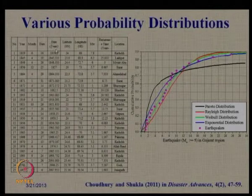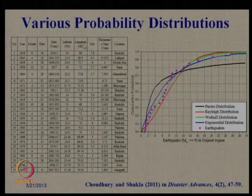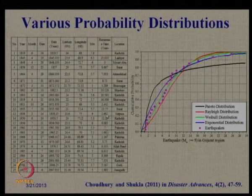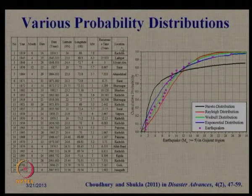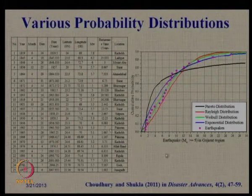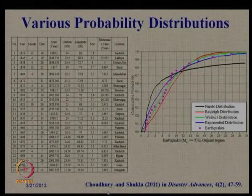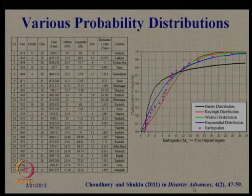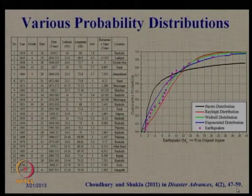The occurrence dates are expressed in year format as decimals considering month and date. Recurrence time in years can be found using the Gutenberg-Richter relationship. The location of each earthquake — whether Kach region or Saurashtra region — is also identified. This study in detail can be found in the journal paper by Choudhury and Shukla 2011, Disaster Advances, volume 4, number 2, pages 47–59.